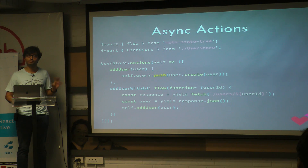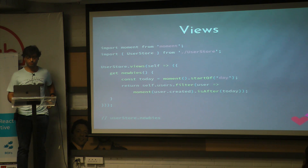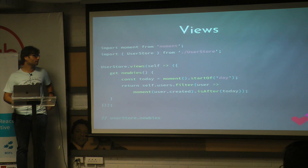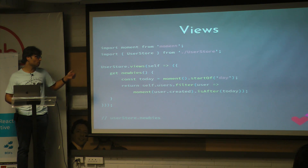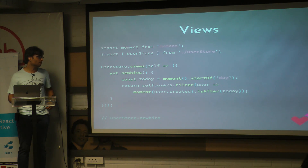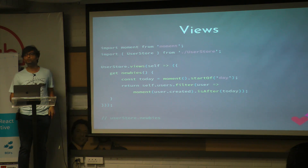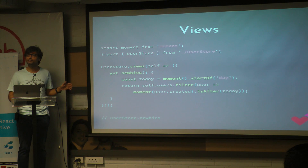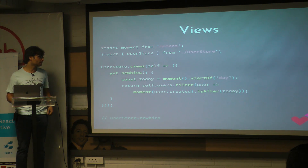I did not have to use any other library for creating these side effects or doing anything like that — it's right there. MobX State Tree also has the concept of views. Views are kind of memoized. You can memoize anything that you store on the view. So for example, if you're going to get the list of all users who joined in the last day — whenever you get a new user and this value changes, that is the only time that property will give you a new value. Otherwise it returns the cached value. This is something you would use reselect for in Redux — it's built right into the library.